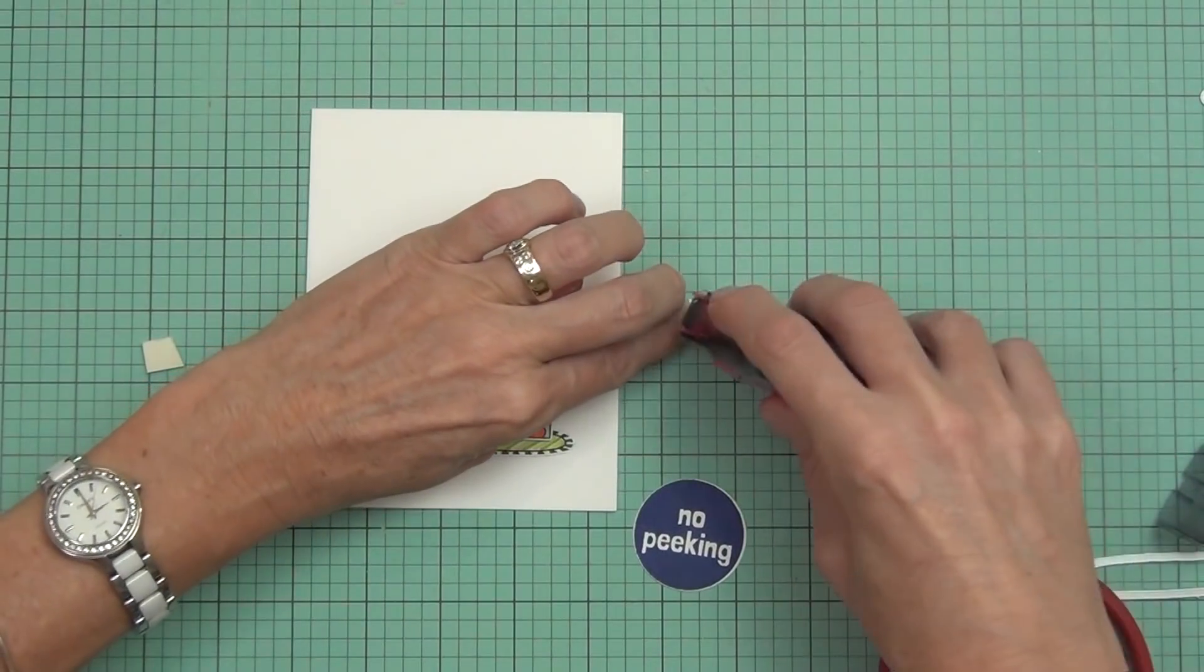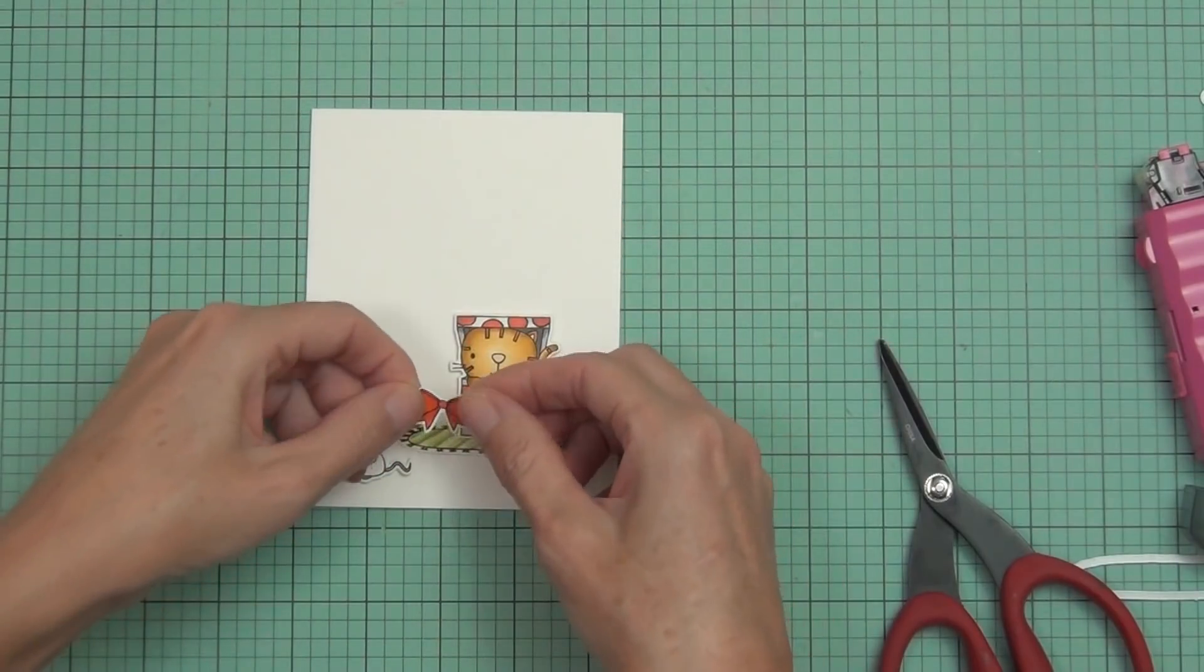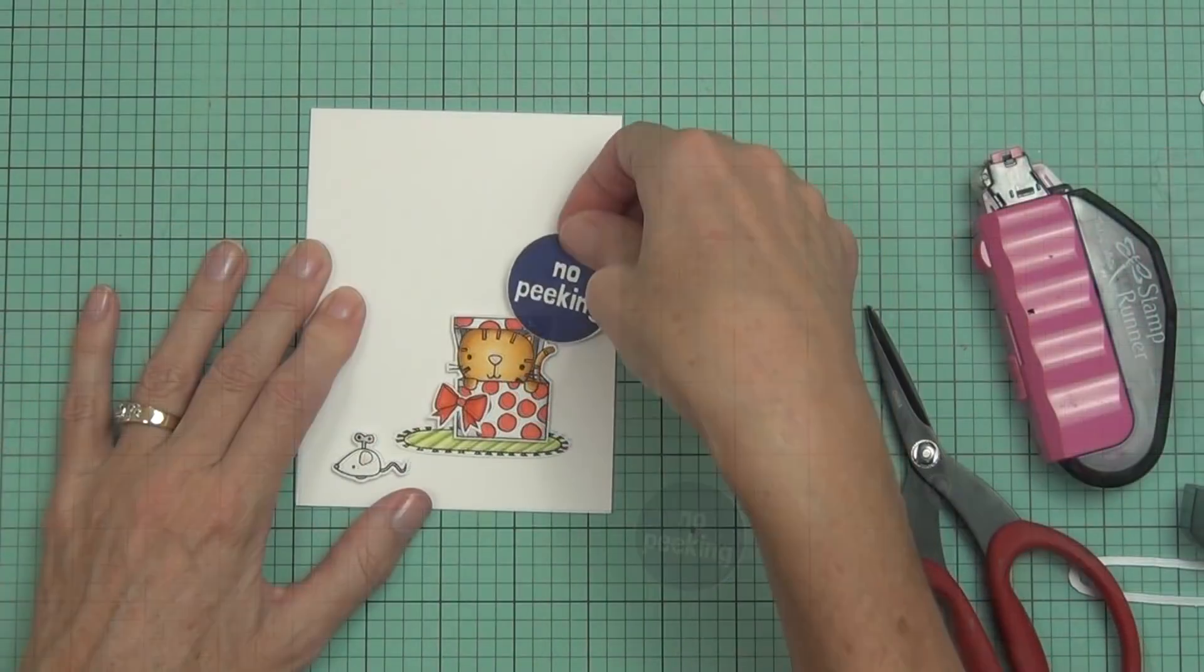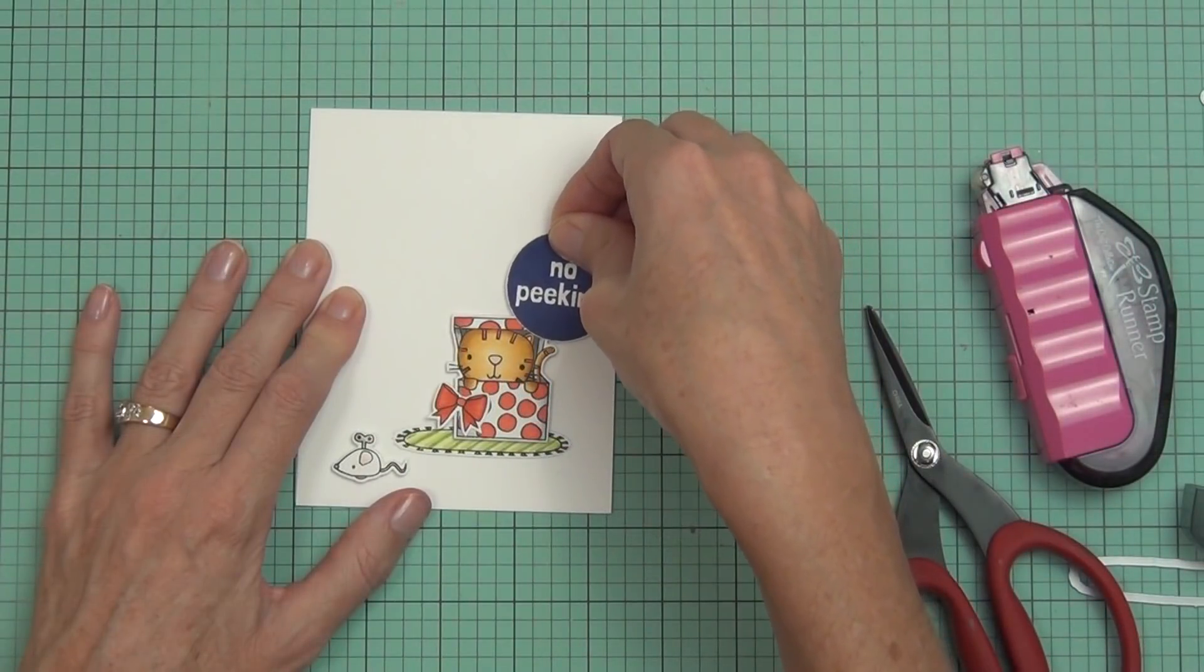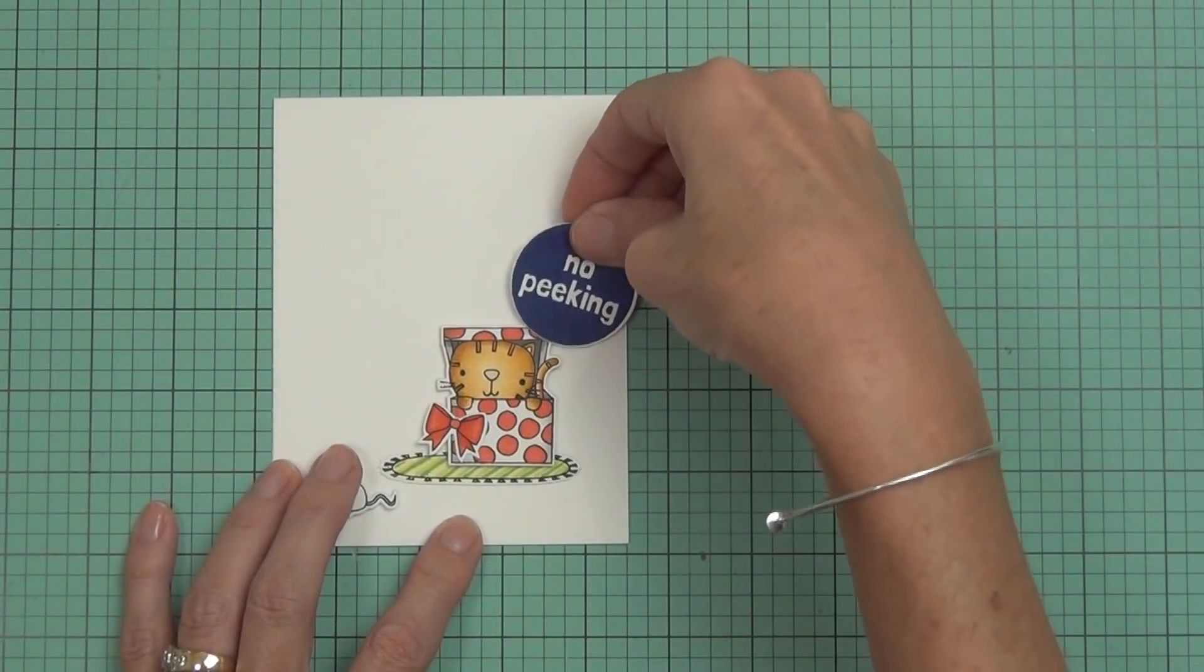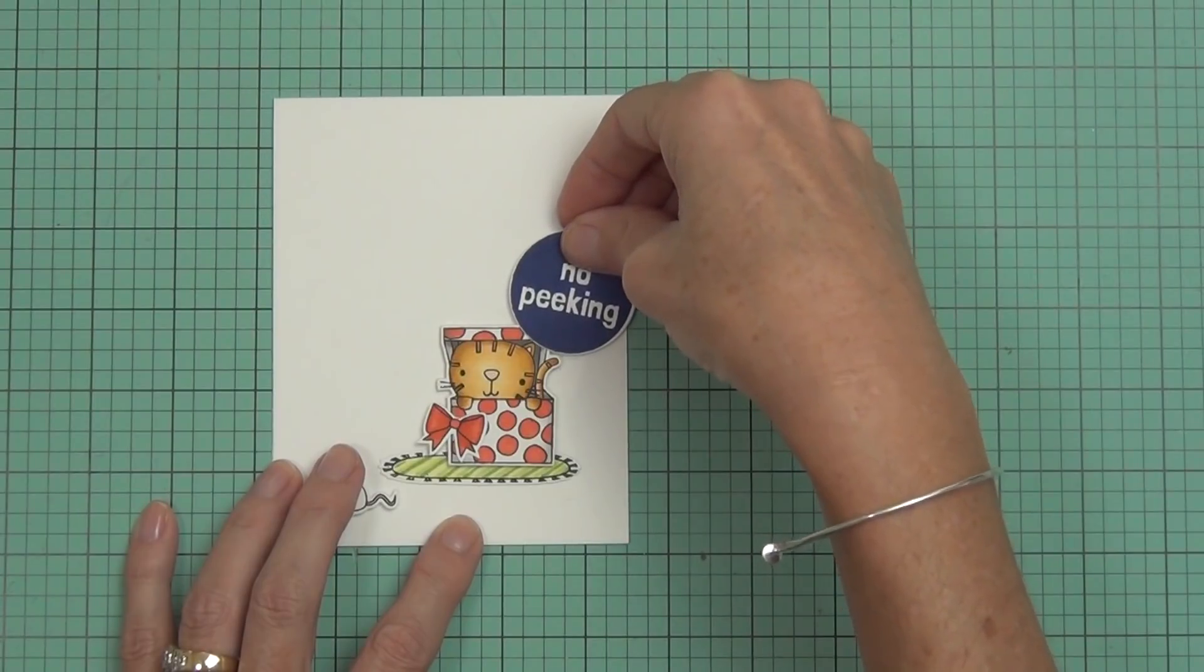I've got my tape runner and I'm using my—it's not even foam dots, is it? That's an old adhesive too that I'm using up. Now here's me trying to work out: sentiment on an angle, sentiment straight, sentiment on an angle.